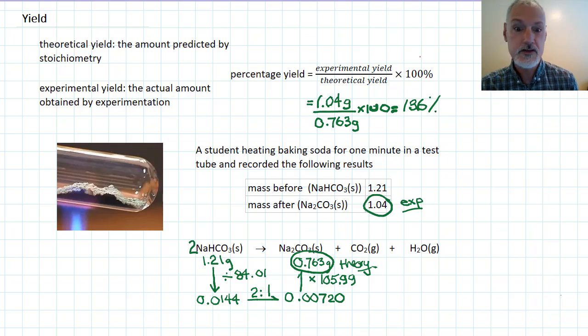Now, that should raise a question mark. How can you get more than is theoretically possible? This would indicate that the substance that remains in the test tube at the end of the experiment mustn't just be sodium carbonate. There must be some other materials in there. Any time you're over 100%, you've got some impurities that are present.